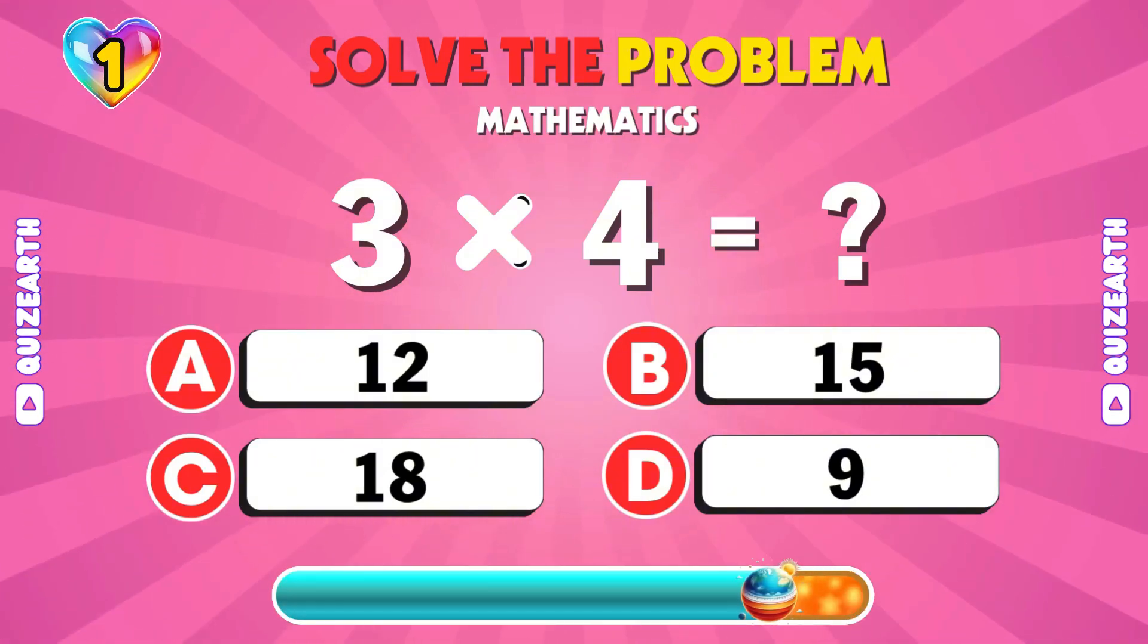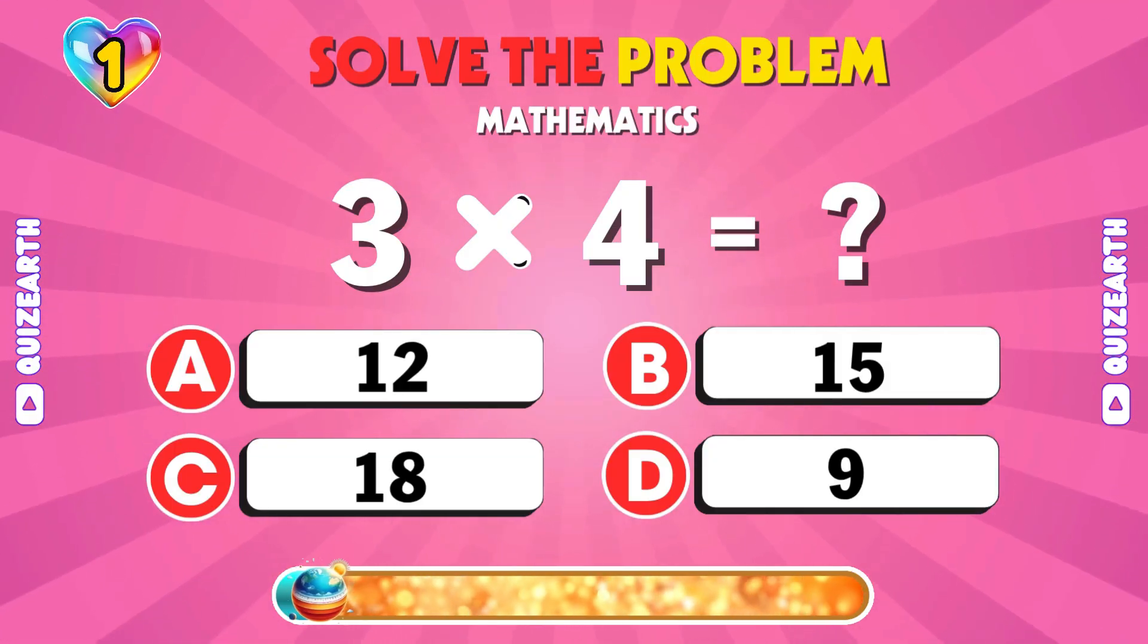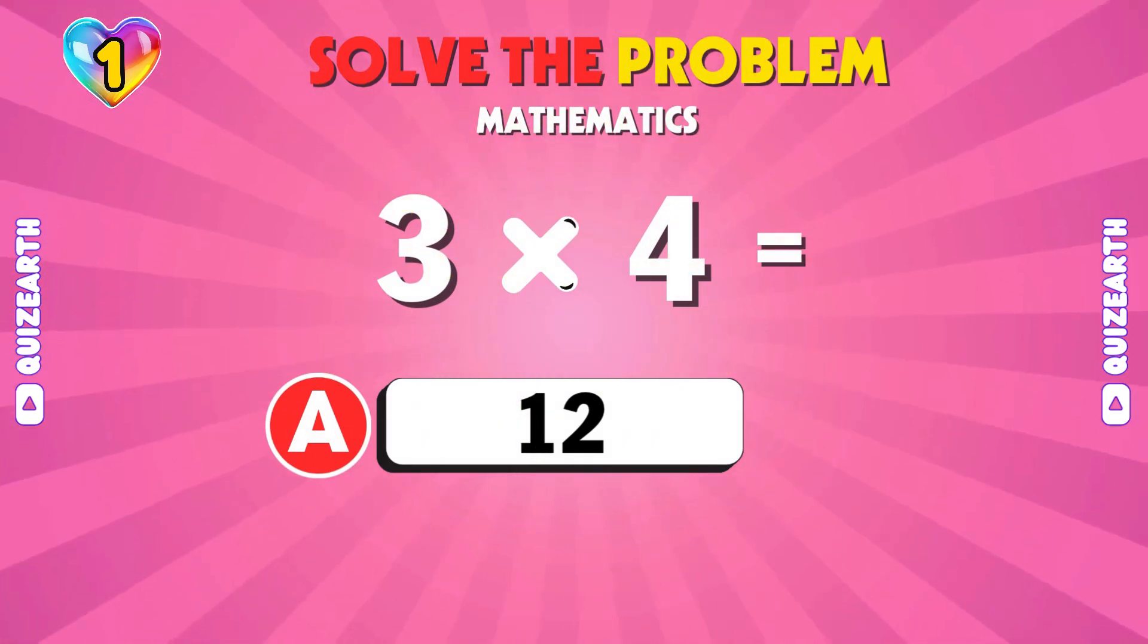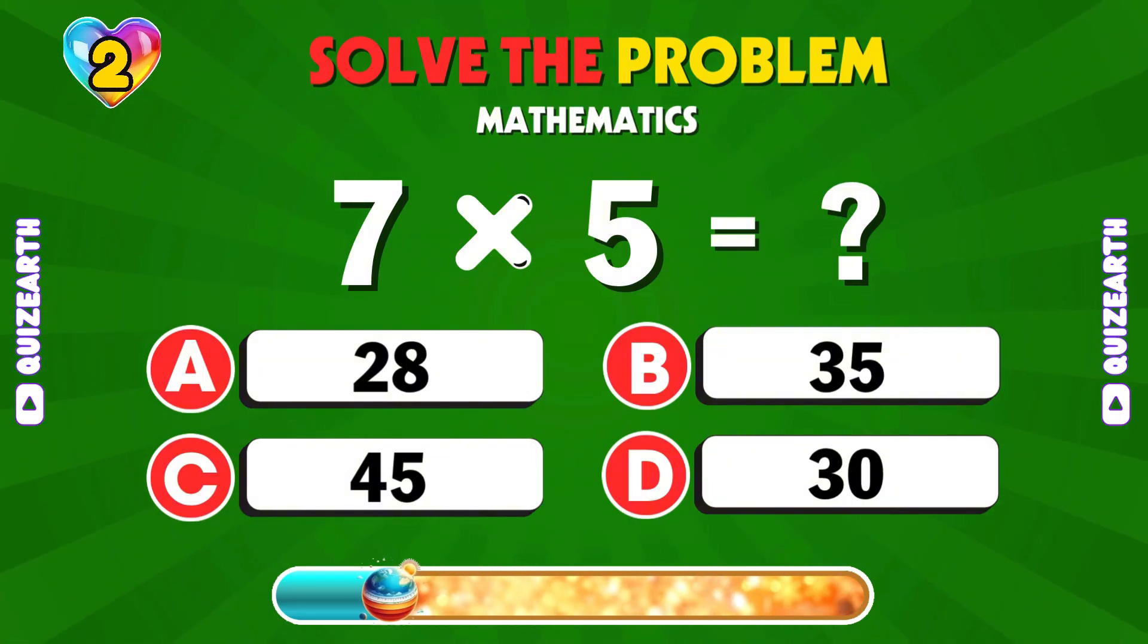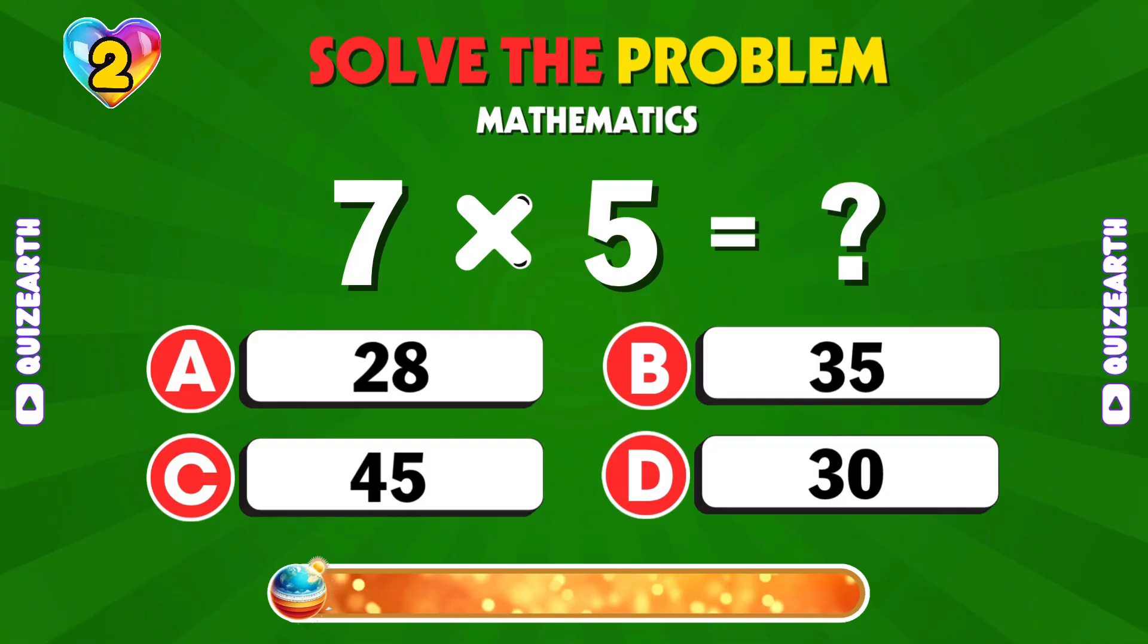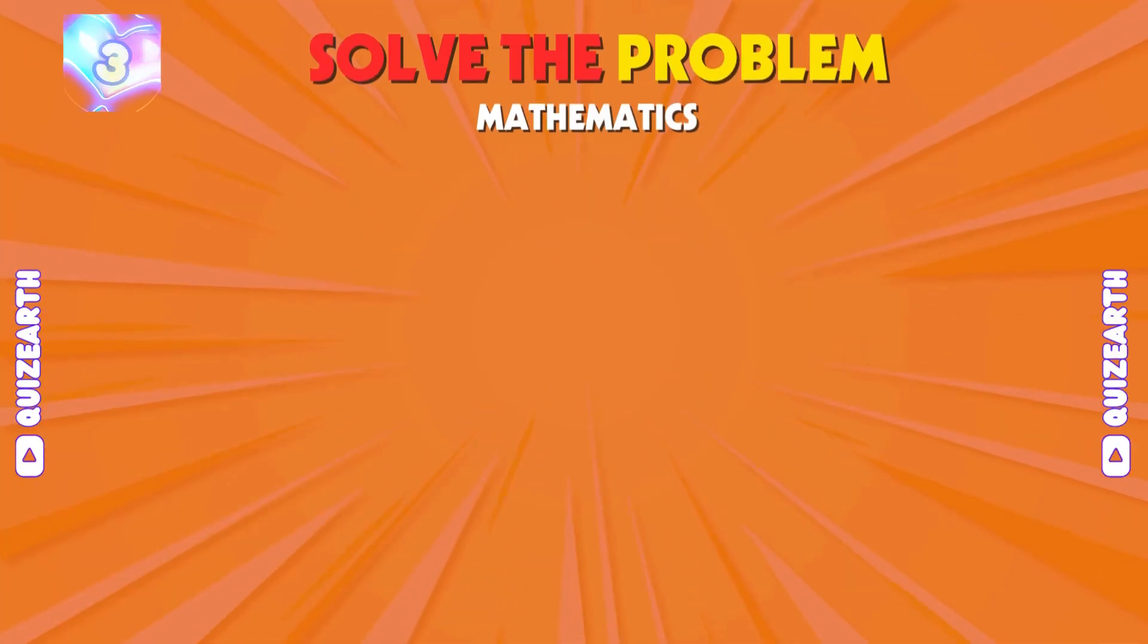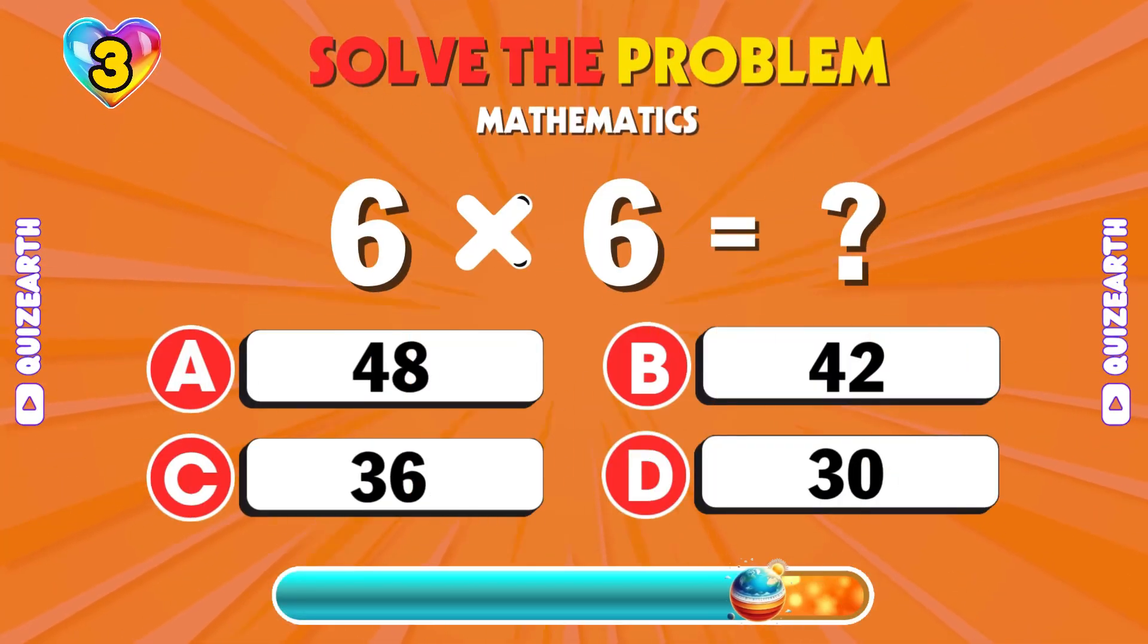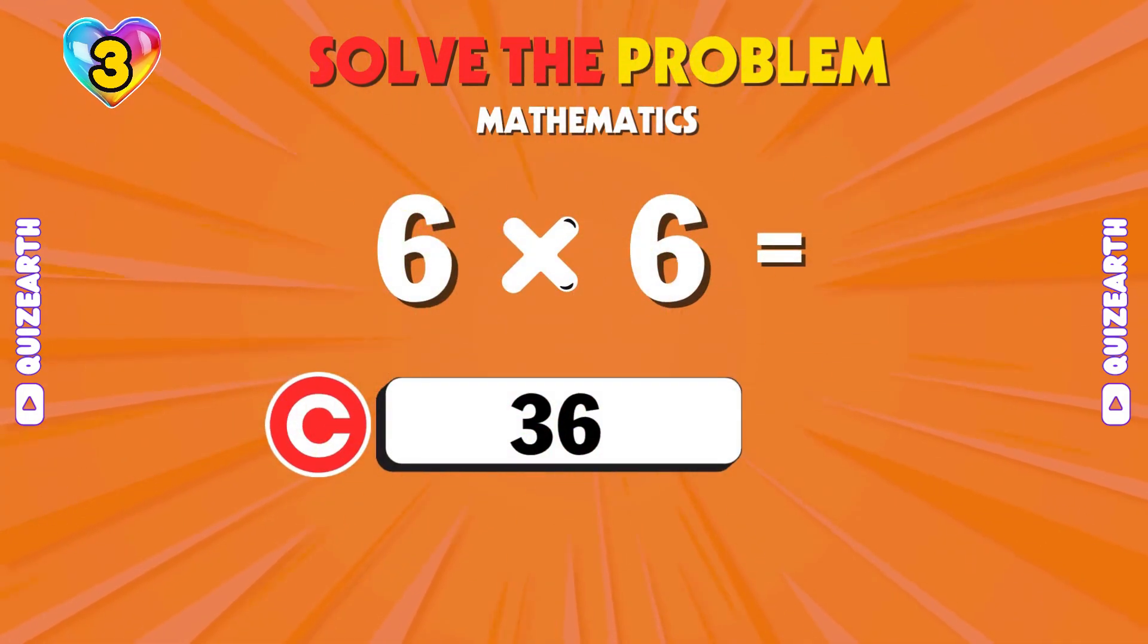Quick, what's 3 times 4? Correct answer, 12. Can you solve 7 times 5? That's 35. Think fast, 6 by 6? Answer, 36.